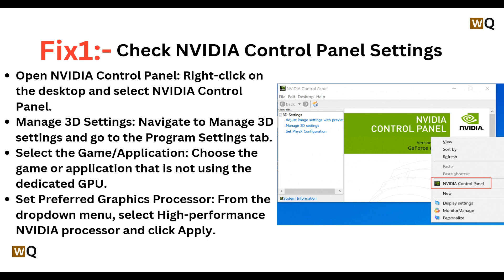Navigate to Manage 3D Settings and go to the Program Settings tab. Select the game or application that is not using the dedicated GPU. From the preferred graphics processor drop-down menu, select High Performance NVIDIA Processor and click Apply.